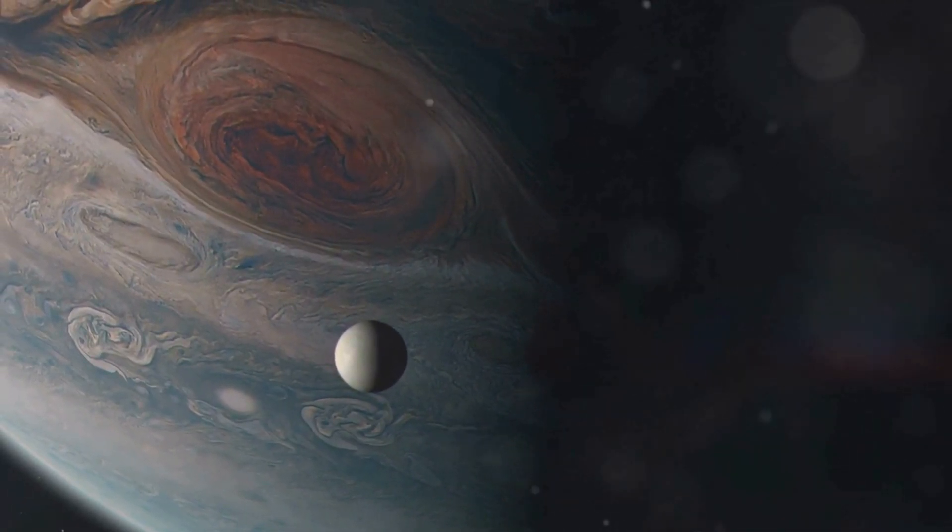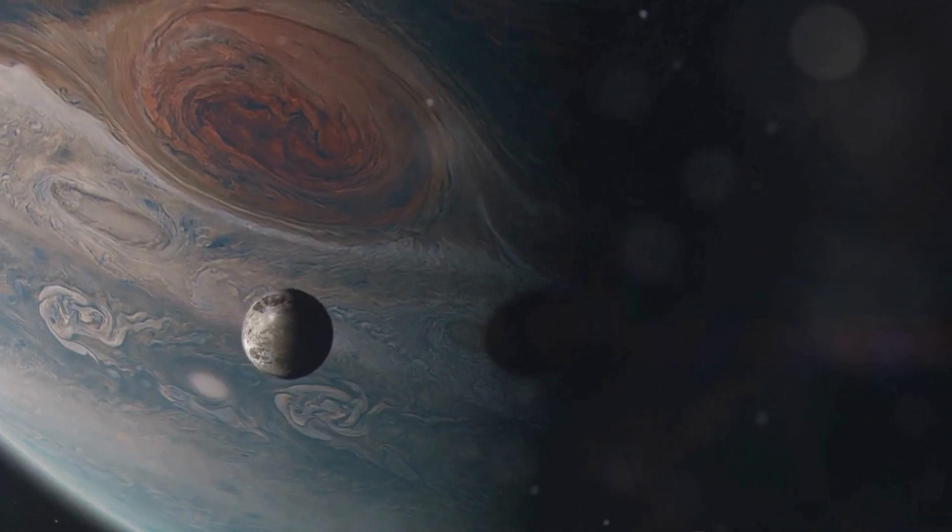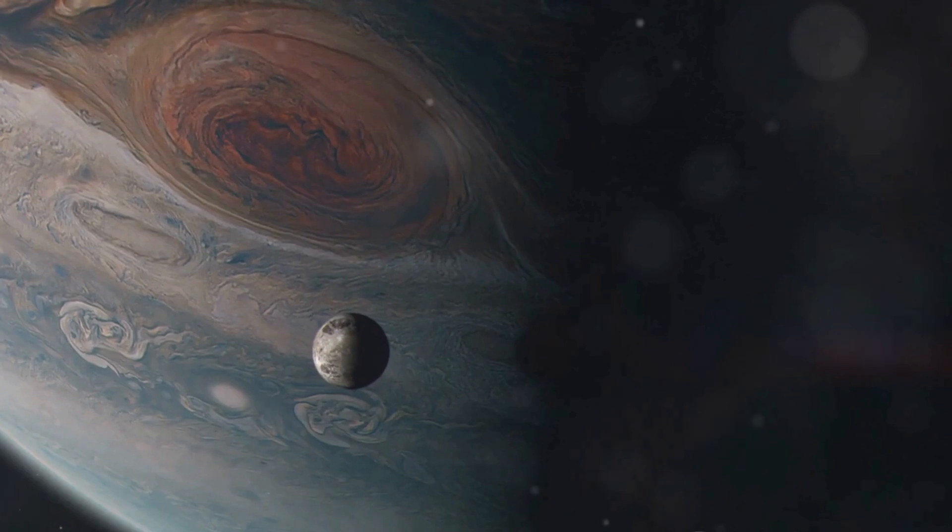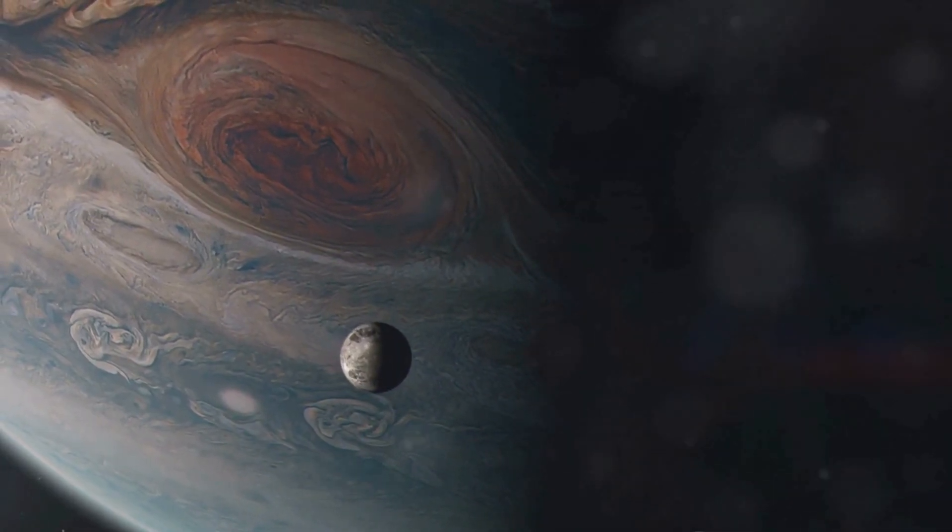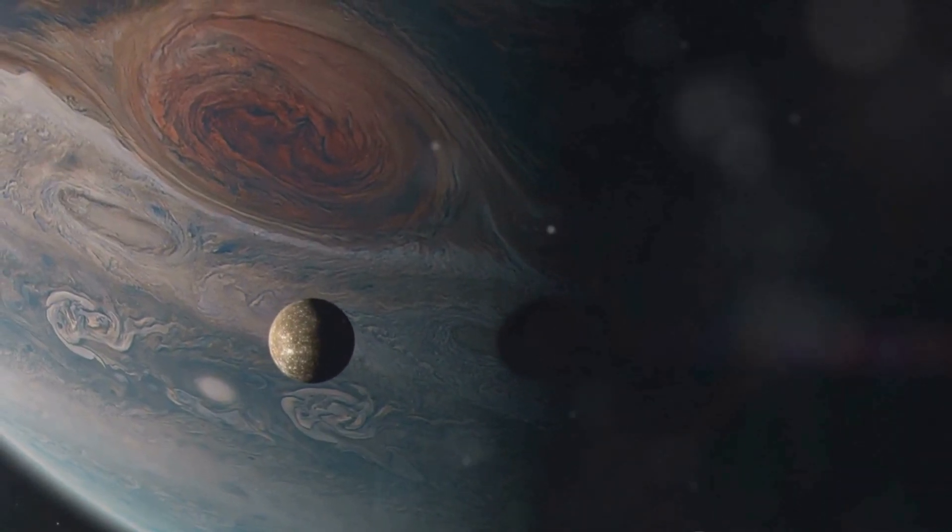Io, the closest moon to Jupiter, casts a shadow that moves rapidly across the planet. Europa, a bit farther out, casts a slower-moving shadow. And Ganymede, the farthest of the three, casts a shadow that seems to creep languidly across Jupiter's face.